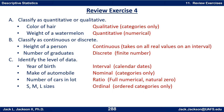For part C, identifying the level means identifying as nominal, ordinal, interval, or ratio. Year of birth is interval — that's calendar dates, one of the two things that will be interval. Make of automobile is nominal — it only has categories with no inherent order. Number of cars in a lot is a count — that's ratio, it has the full numerical scale and a natural zero. Note that ratio data can be discrete or continuous; this is discrete and ratio. Small, medium, large sizes is ordinal — it has categories with order, but not a meaningful numerical scale.